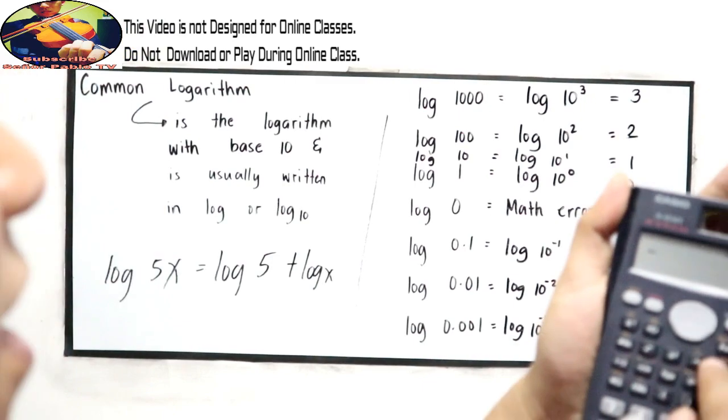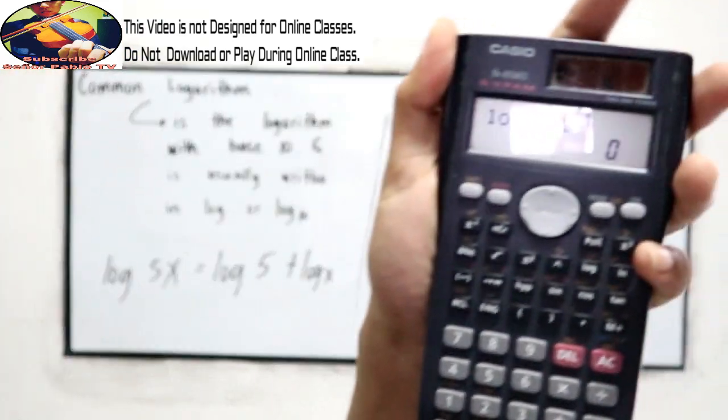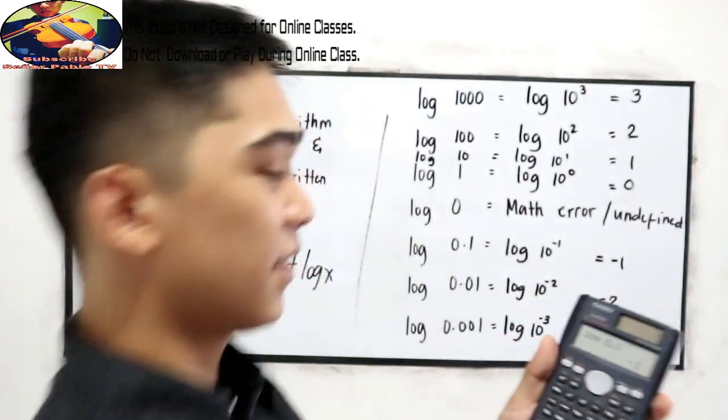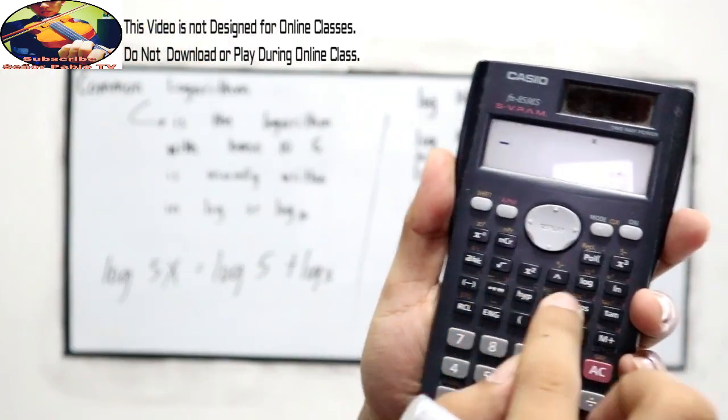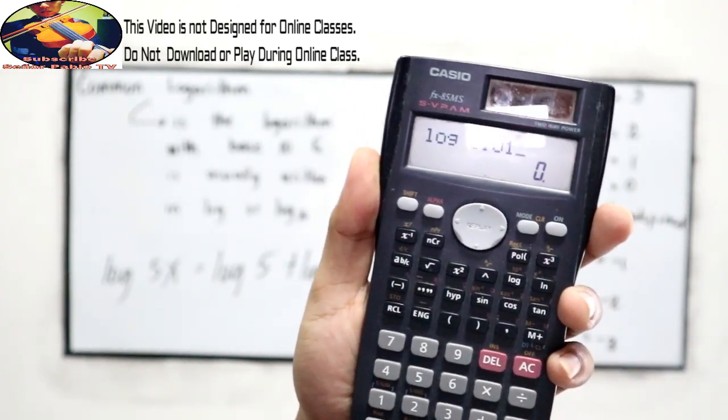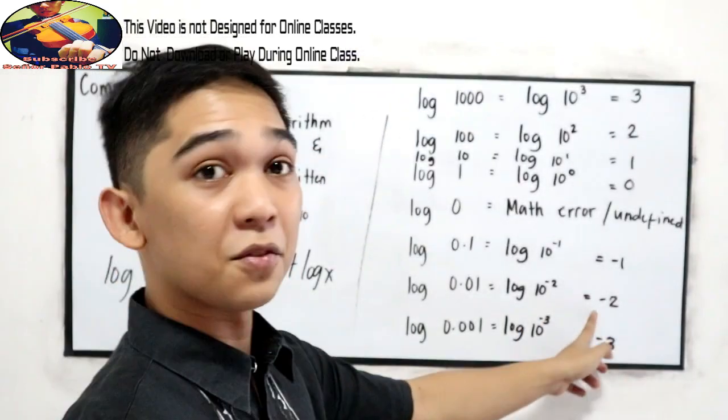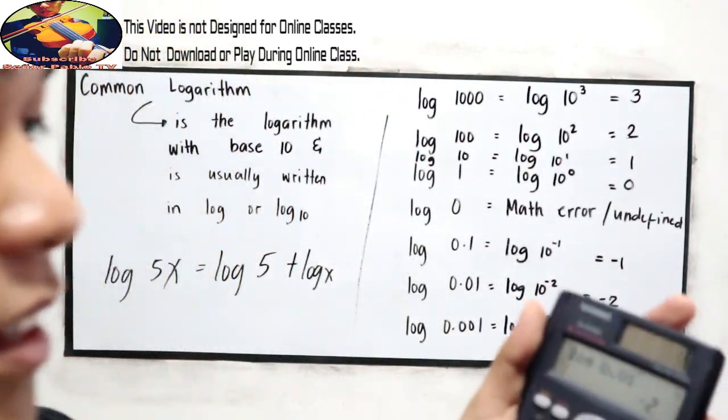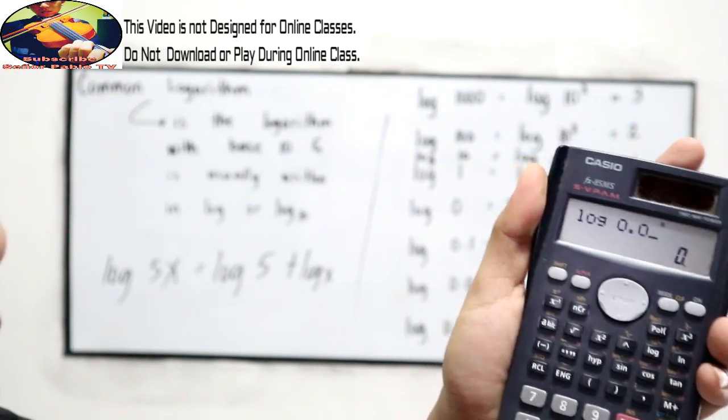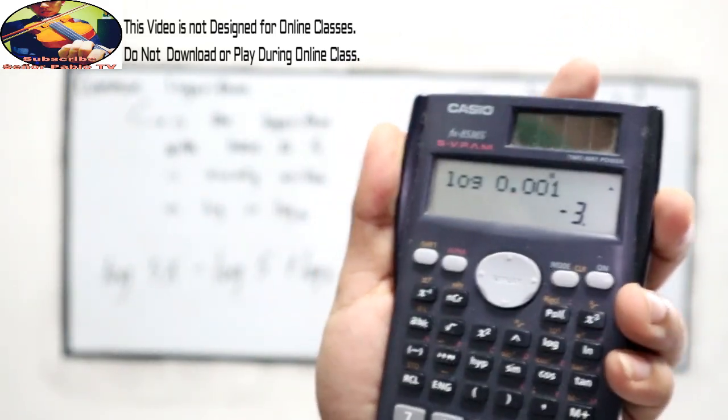And log 0.1, that is negative 1. And log 0.01, which is negative 2. And log 0.001, which is negative 3.